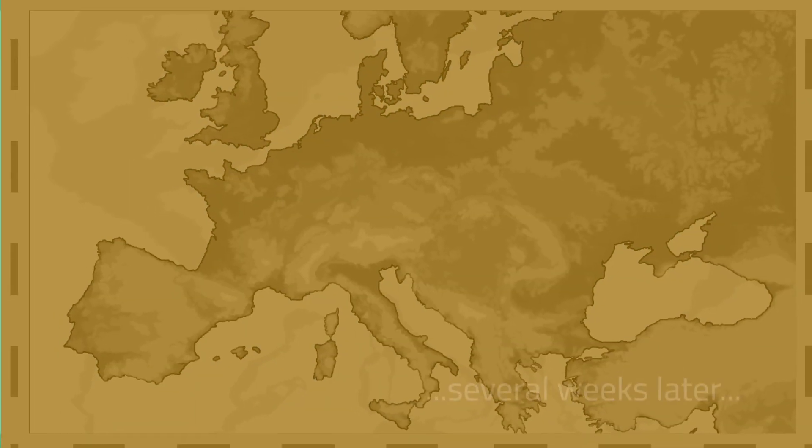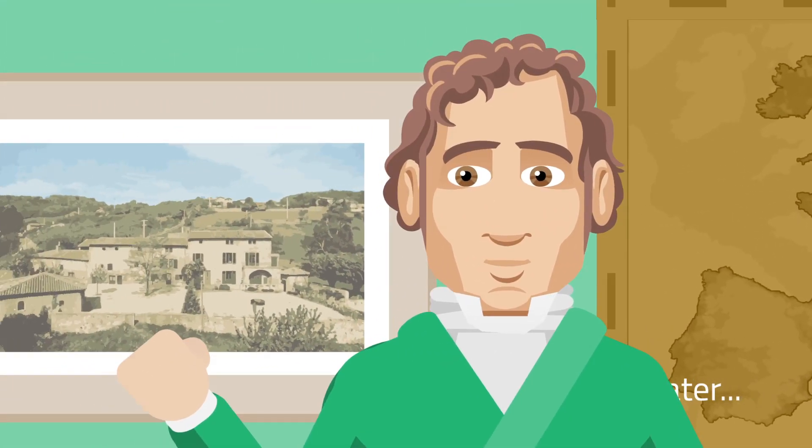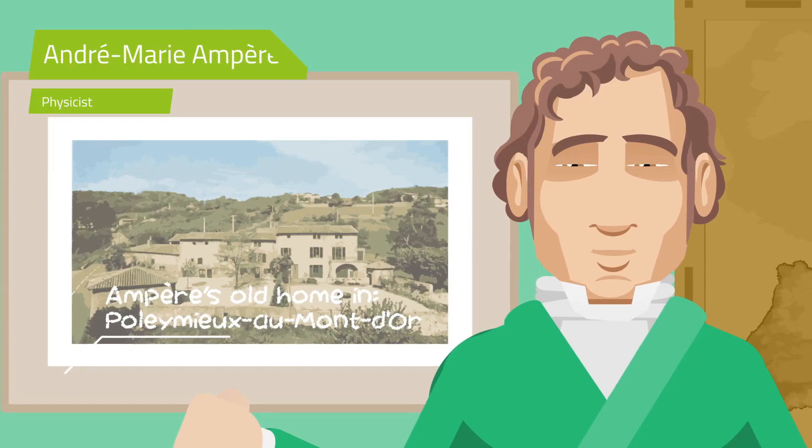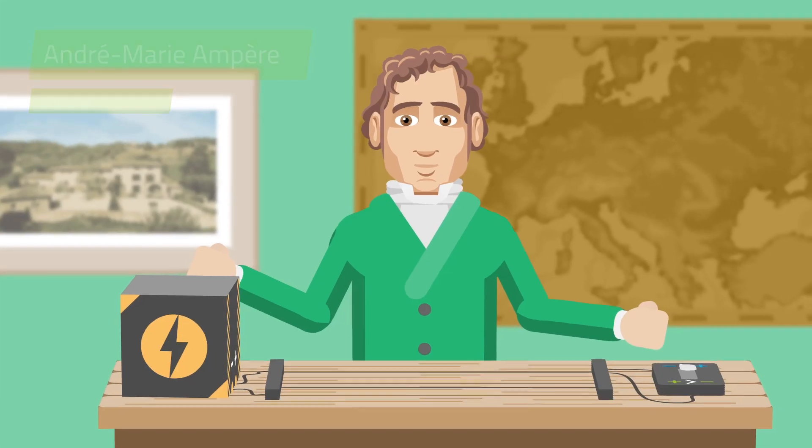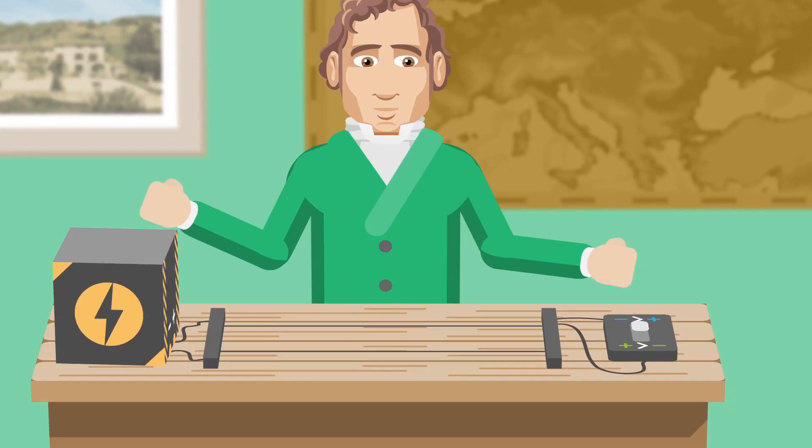The Académie in Paris asked André-Marie Ampère to verify Ørstedt's findings. In the summer of 1820, Ampère repeated the experiment and did some additional research as well.